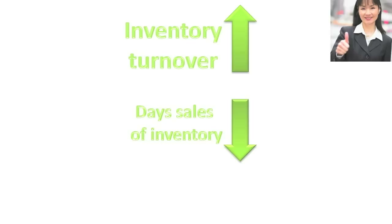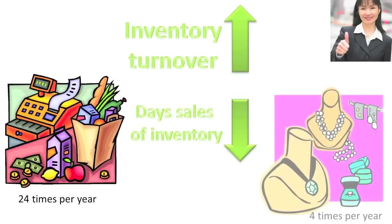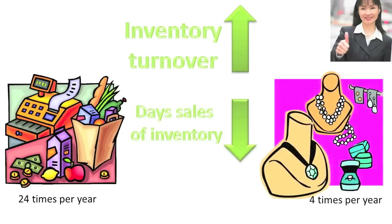For example, it wouldn't make a lot of sense to compare the ratios of a grocery store with an Inventory Turnover Ratio of 24 to those of a high-end jewelry store with an Inventory Turnover Ratio of only 4. Because the two industries are so different, a comparison of their ratios would probably not reveal very much about management's effectiveness and efficiency, as they operate under different circumstances.